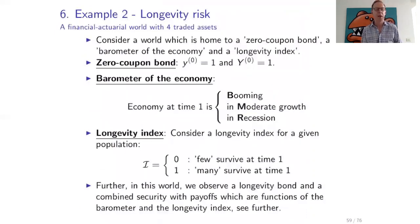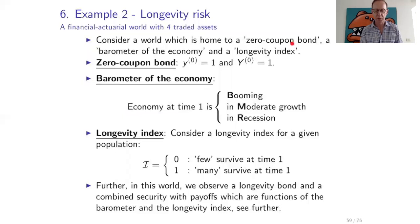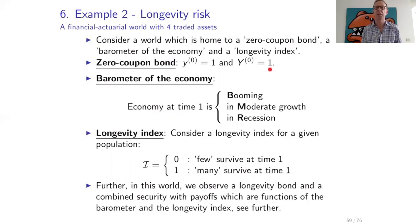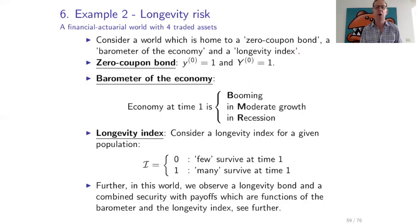Now we come to a second example: an example on longevity risk. We consider a financial actuarial world with four traded assets. First, there is a zero coupon bond. Second, there is a barometer of the economy — a random variable that tells us the state of the economy at time one, which can be booming, moderate growth, or recession, denoted B, M, R.